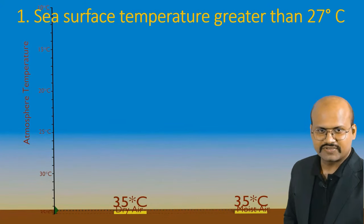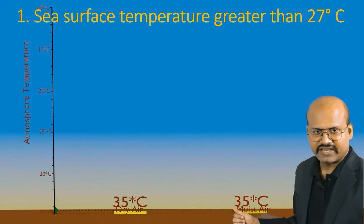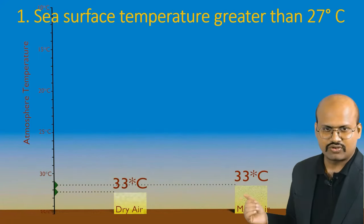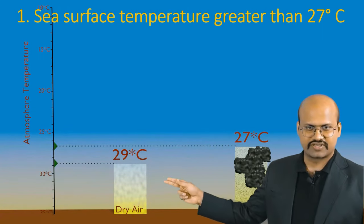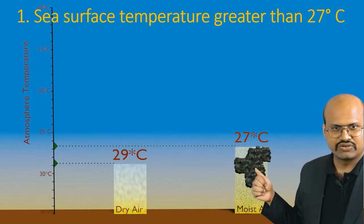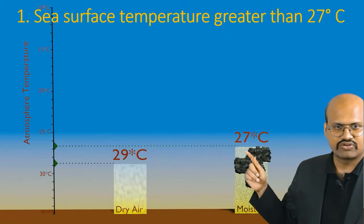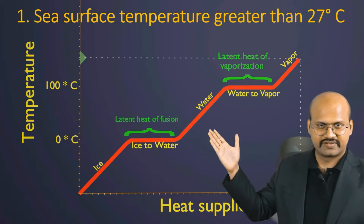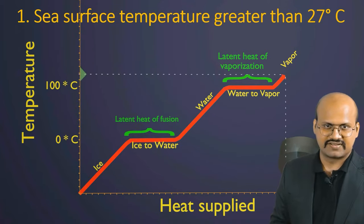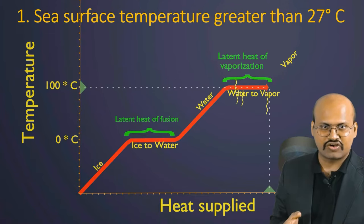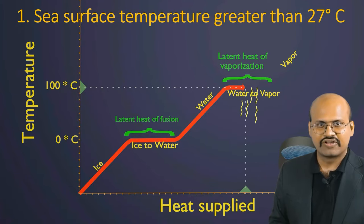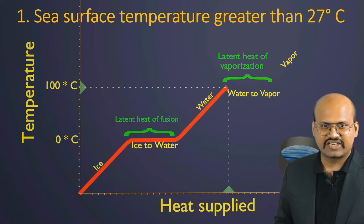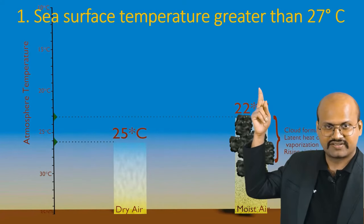We have two wind systems: one is drier with no moisture, and the second is moist with a lot of moisture, both at similar temperature at ground level. As they start to rise, the temperature of the drier air reduces quickly while the moist air's temperature does not reduce as fast. This is because clouds are formed and latent heat of vaporization is released during condensation, heating the air from within. Therefore the moist air is able to move to much higher heights compared to the dry air.